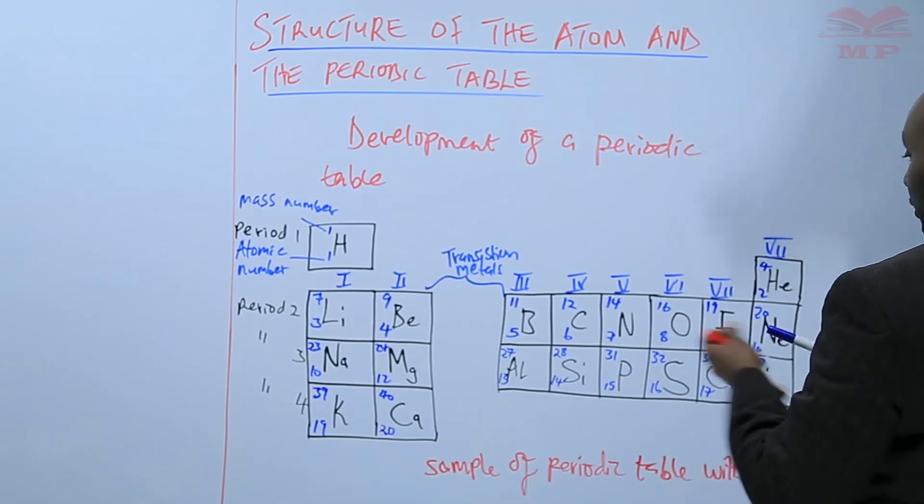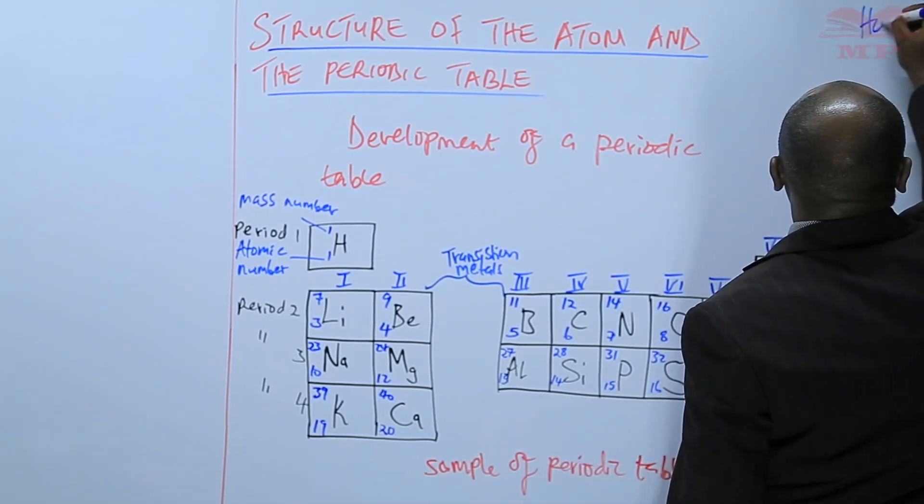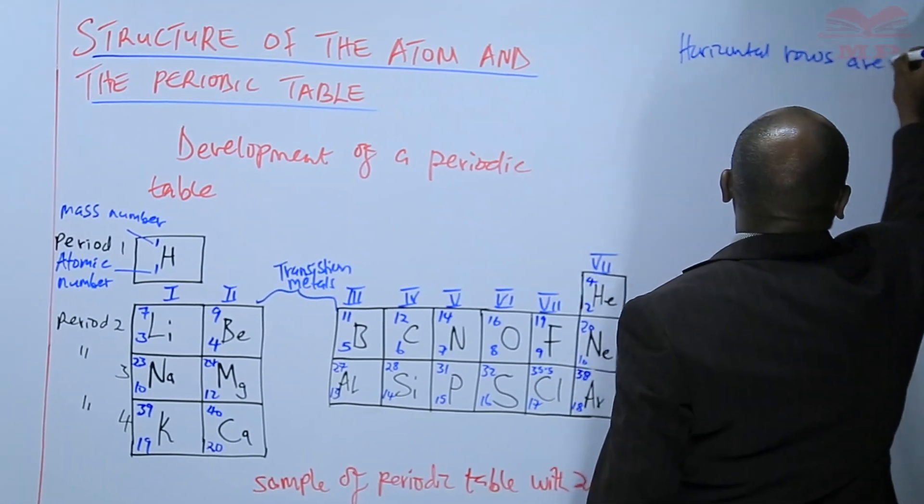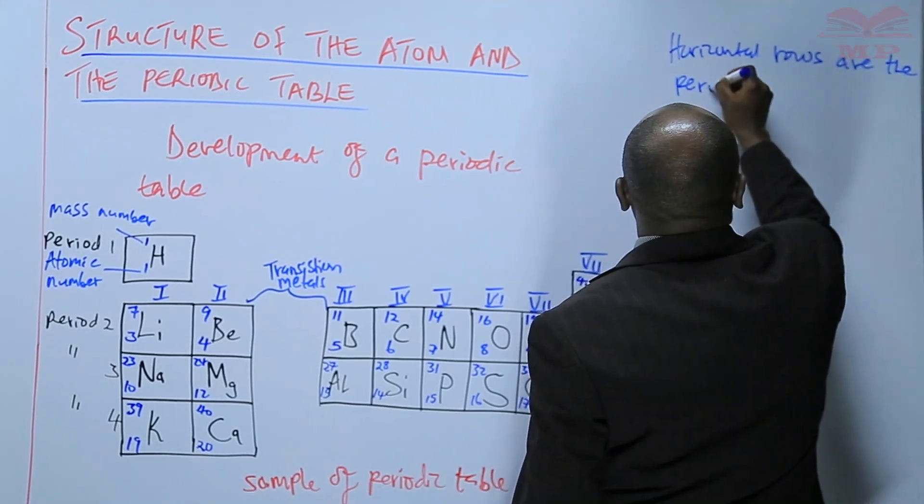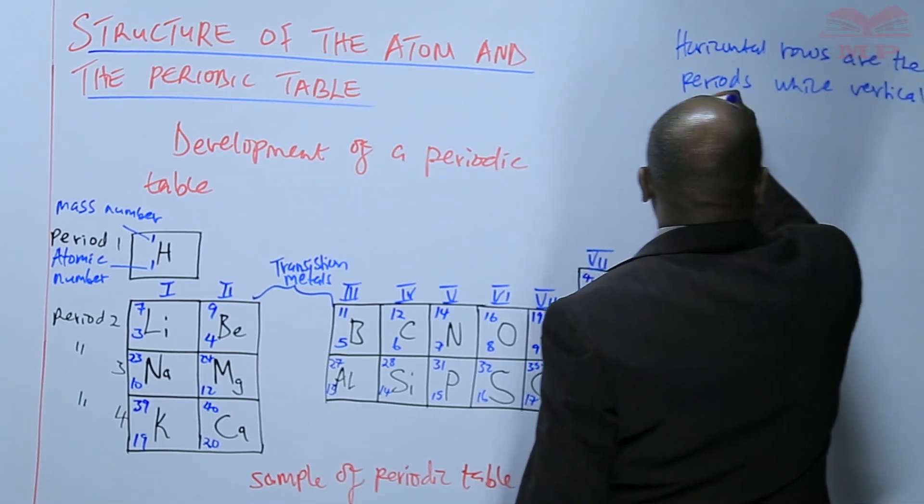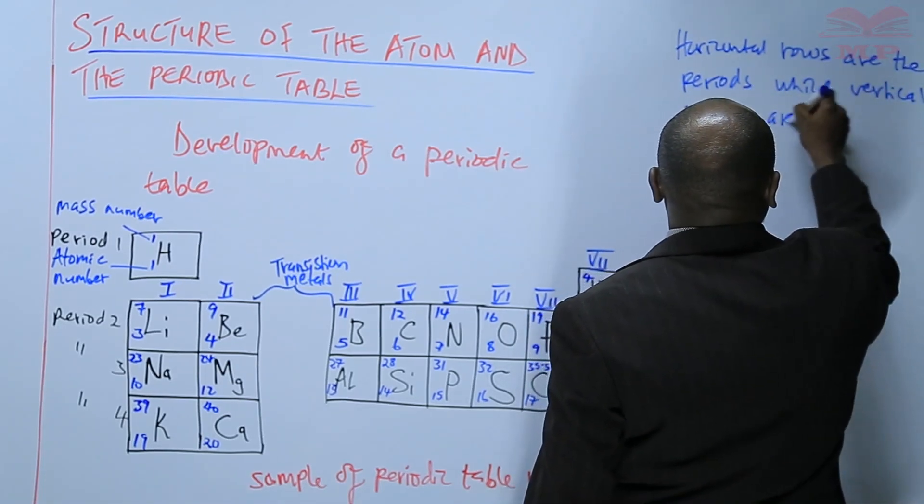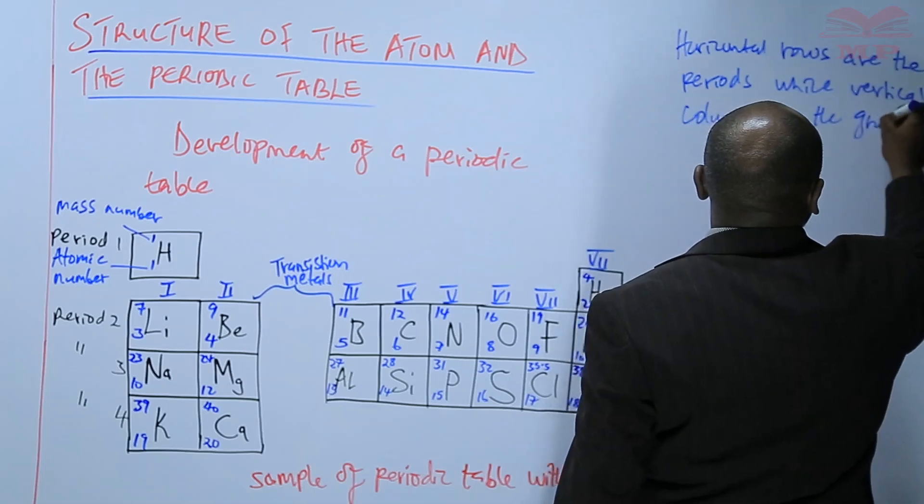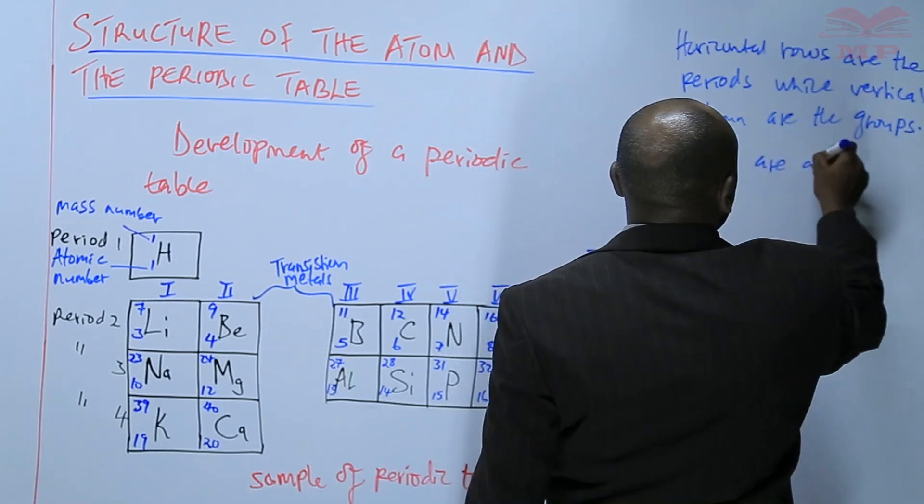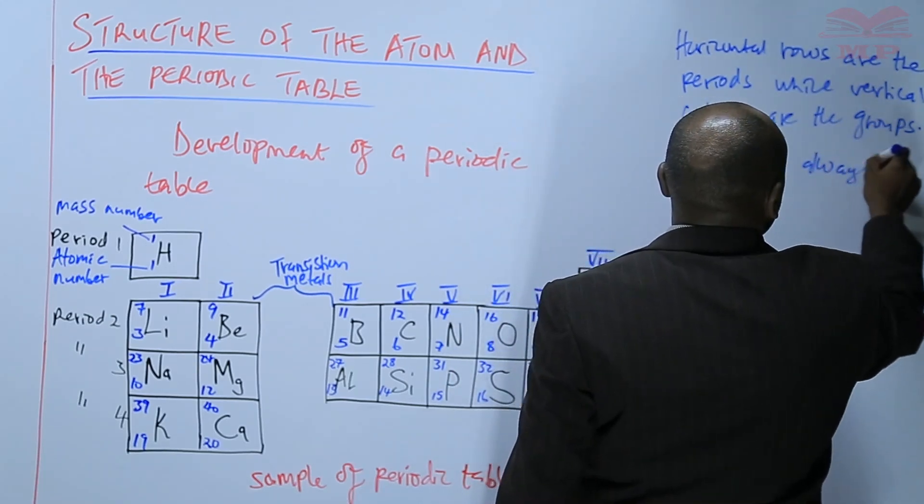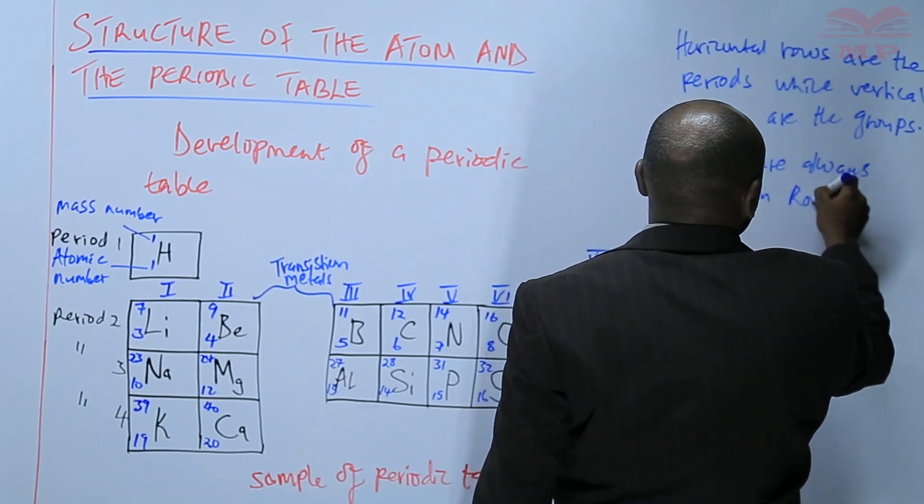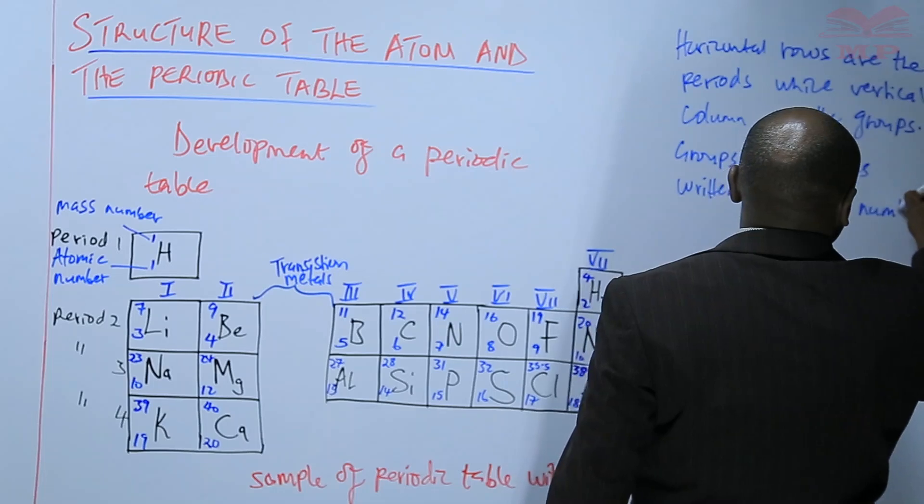We are saying that when developing the periodic table, horizontal rows are the periods, the vertical columns are the groups. And we say that groups are always written in Roman numbers as indicated.